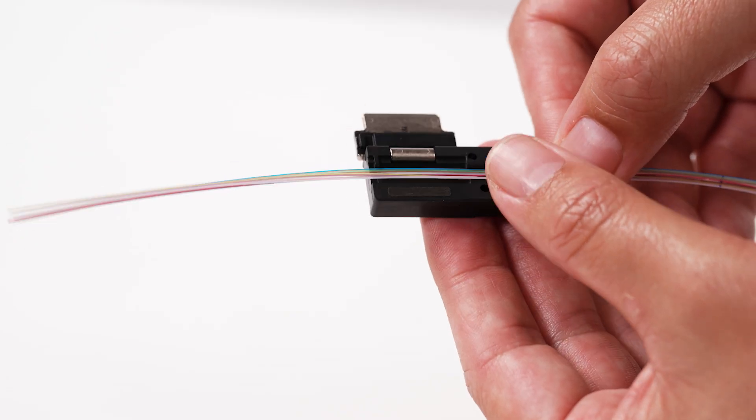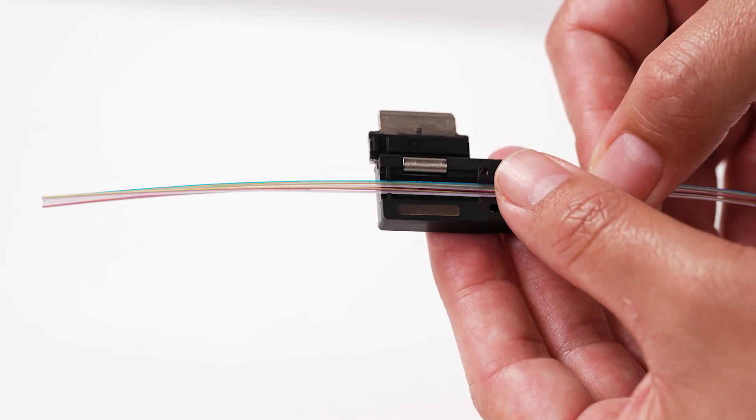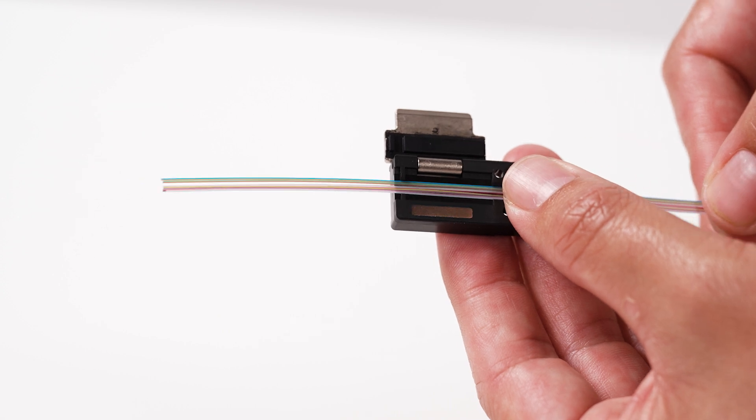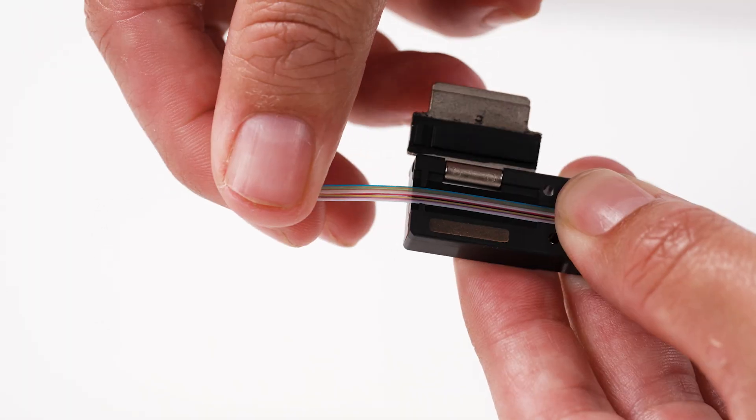Open the ribbon fiber holder. Align the ribbon into the holder with one inch of ribbon protruding from the holder. Close the ribbon holder.